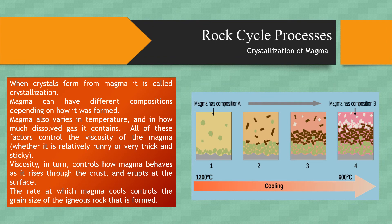Crystallization of magma. When crystals form from magma, it is called crystallization. Magma can have different compositions depending on how it was formed, and also varies in temperature and in how much dissolved gas it contains. All of these factors control the viscosity of the magma — whether it's relatively runny or very thick and sticky. Viscosity, in turn, controls how magma behaves as it rises through the crust and erupts at the surface. The rate at which magma cools controls the grain size of the igneous rock formed; more rapid cooling produces finer-grained rocks.